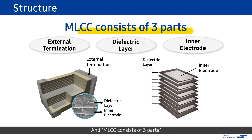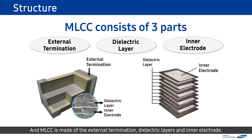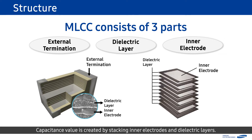An MLCC consists of three parts: an external termination, dielectric layers, and inner electrode. The external termination makes contact with circuits and delivers electrons to the inner electrode. Capacitance value is created by stacking inner electrodes and dielectric layers.